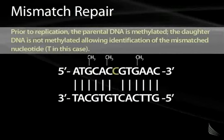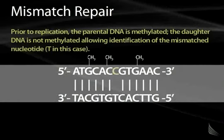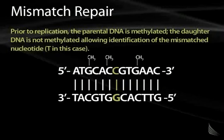Prior to replication, the parental DNA is methylated — that is, a methyl group is added to various nucleotides on the parental strand. The daughter DNA formed during replication is not methylated, and this allows the DNA mismatch repair mechanism to recognize the daughter strand as the one in which the mismatched nucleotide is occurring. In the example shown, the parental or upper strand is methylated, so the repair mechanism recognizes that the correct nucleotide is the C, not the T. The T would be repaired and replaced with a G, giving a correctly paired set of nucleotides.